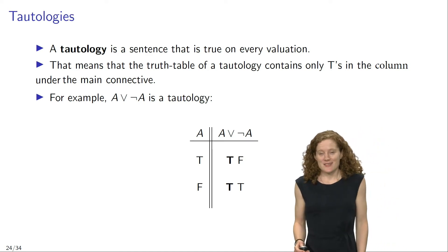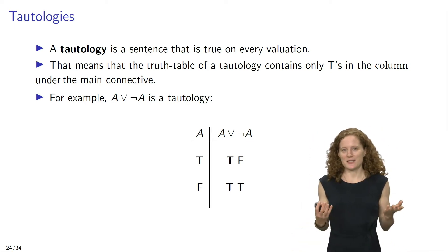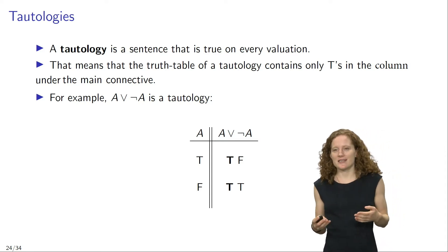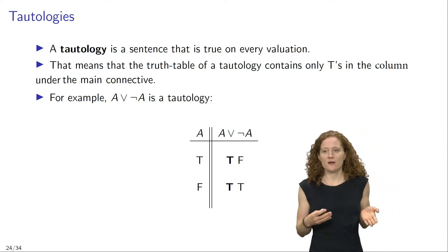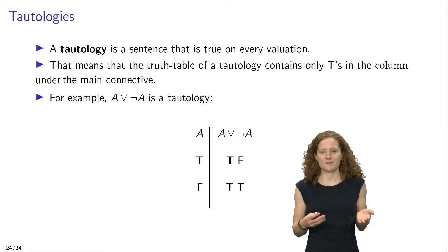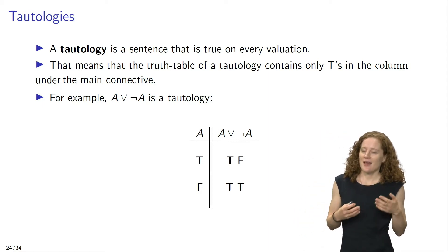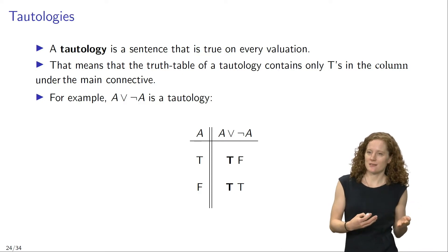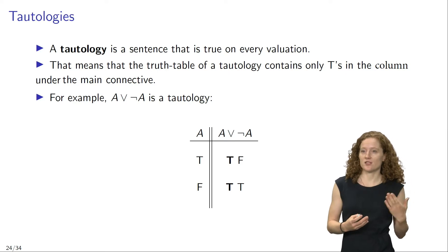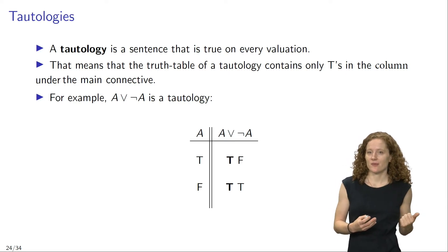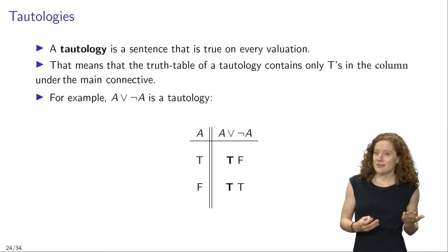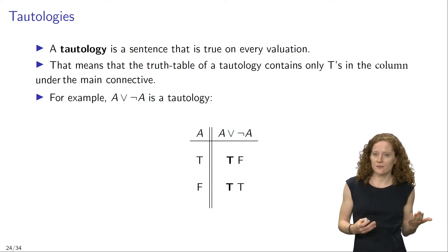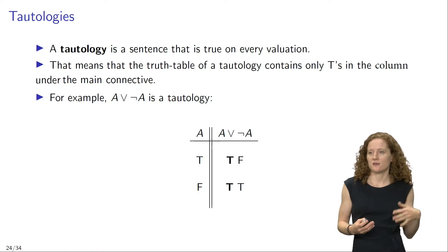The first new semantic concept is the concept of a tautology. A tautology is a sentence that is true on every valuation. Every row in a truth table for a sentence represents one of the possible valuations of that sentence. That means that the truth table of a tautology contains only Ts in the column under the main connective of that sentence.